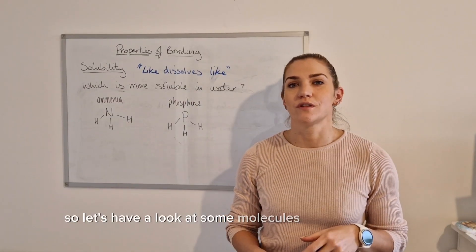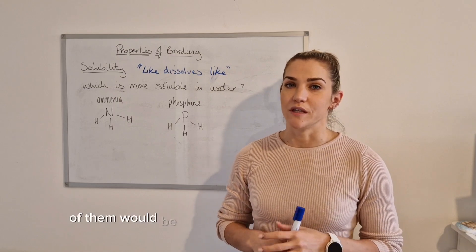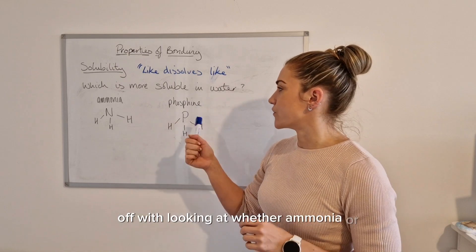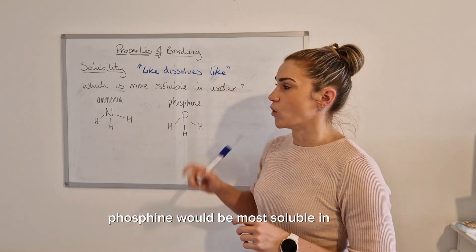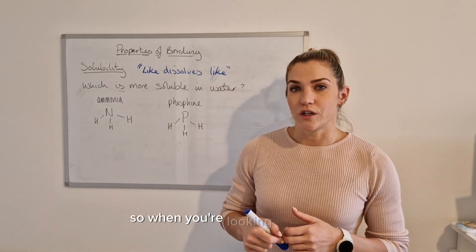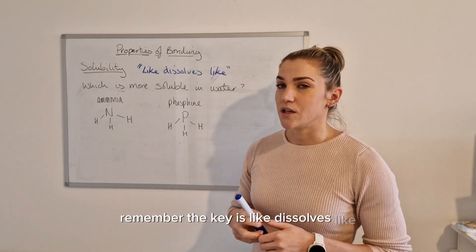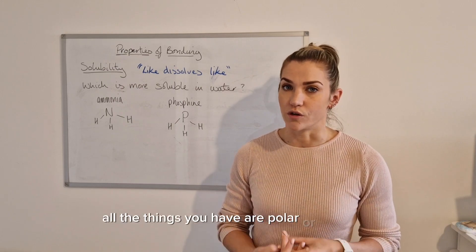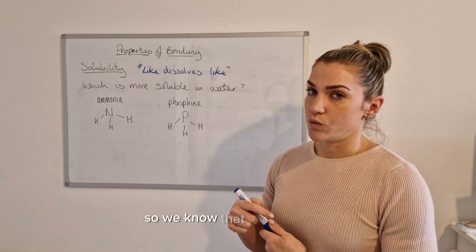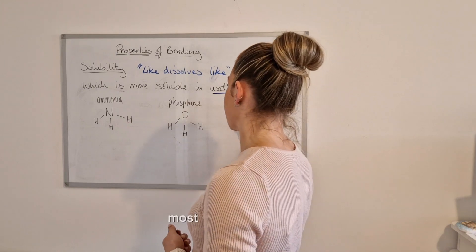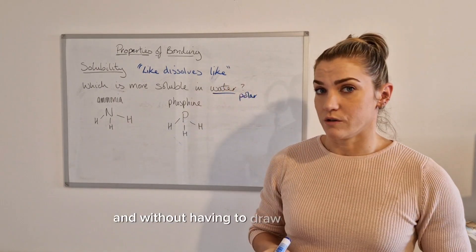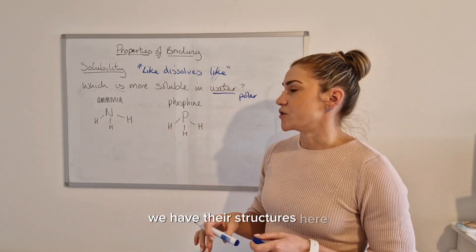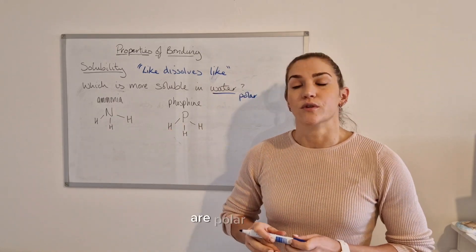So let's have a look at some molecules and decide which of them would be the most soluble in different solvents. So we're going to start off with looking at whether ammonia or phosphine would be most soluble in water. So when you're looking at solubility, remember the key is like solves like, so you really need to first of all start off by identifying if all the things you have are polar or non-polar. So we know that water is polar. Most people know that without having to draw out structure. Ammonia and phosphine, we have their structures here.